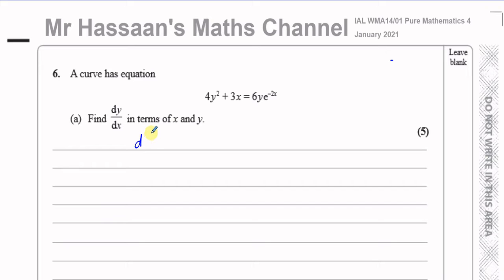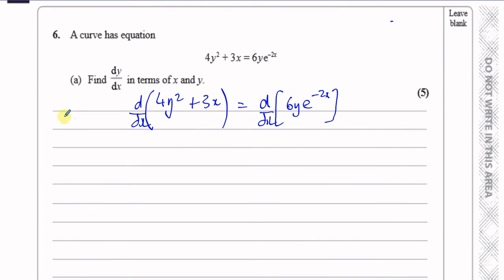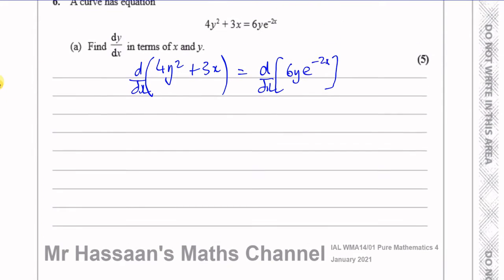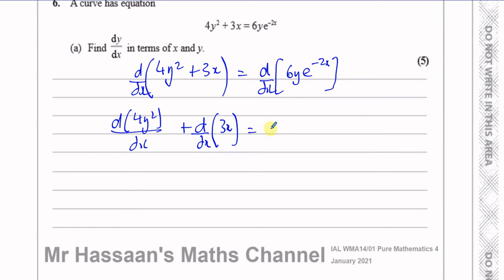I'm going to differentiate the whole of this side and write a few steps I wouldn't normally write down, just to show the process. I'm differentiating 4y-squared plus 3x with respect to x on this side, and all of the right-hand side with respect to x as well. I can take these separate terms and differentiate them separately — each term with respect to x. Because this is a product, I'll do something slightly different for that term.